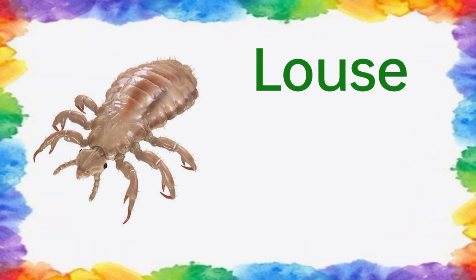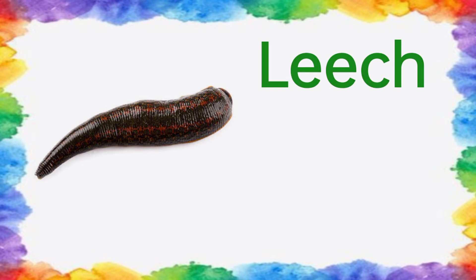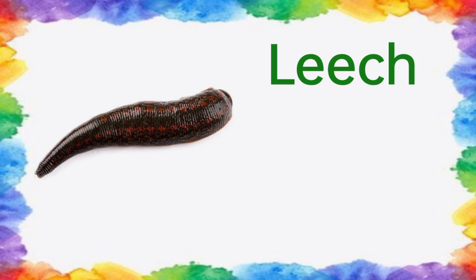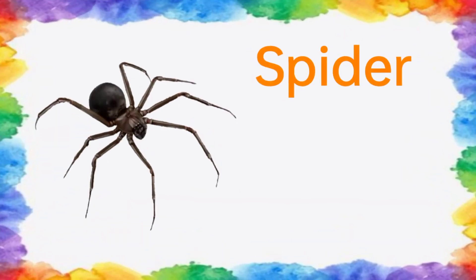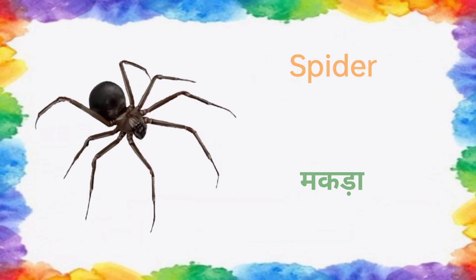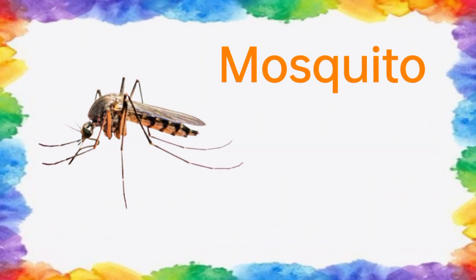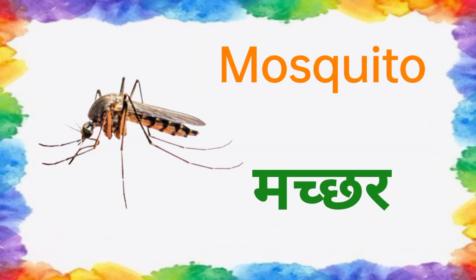Louse means Joon. Leech means Joonk. Spider means Makda. Mosquito means Machar.